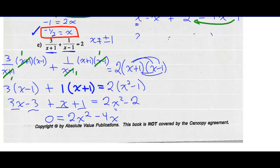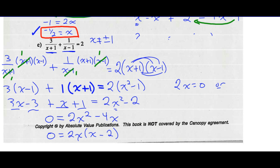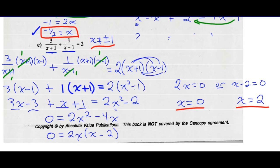This is a nice easy one to factor. 0 equals 2x squared minus 4x, which has a common factor of 2x, leaving x minus 2. Let each factor equal 0: 2x equals 0 gives x equals 0, and x minus 2 equals 0 gives x equals 2. Looking at our non-permissible values — x cannot equal plus or minus 1 — and 0 and 2 are not plus or minus 1, so those are good solutions. x equals 0 or x equals 2.